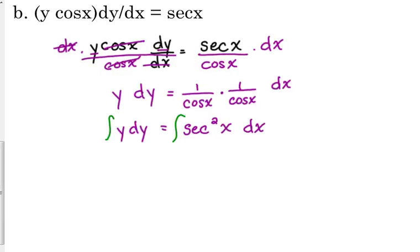So we have y dy is equal to — now we need to simplify that — secant over cosine. Secant is equivalent to 1 over the cosine. We can look at dividing by the cosine as multiplying by 1 over the cosine. And 1 over the cosine times 1 over the cosine is 1 over cosine squared, which is secant squared.